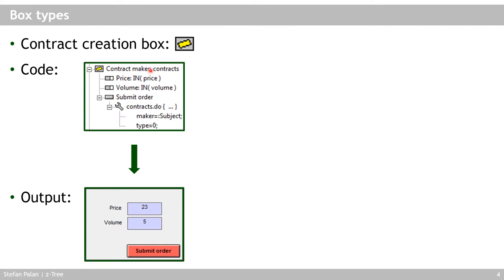For example, here I have a contract creation box for the contracts table — the box is named 'contract maker' — and I have two input items: one for the price the subject wishes to offer, and one for the volume of shares they wish to trade. Then you have a button in this contract creation box that runs a program in the contracts table, which is the same table as the contract creation box.